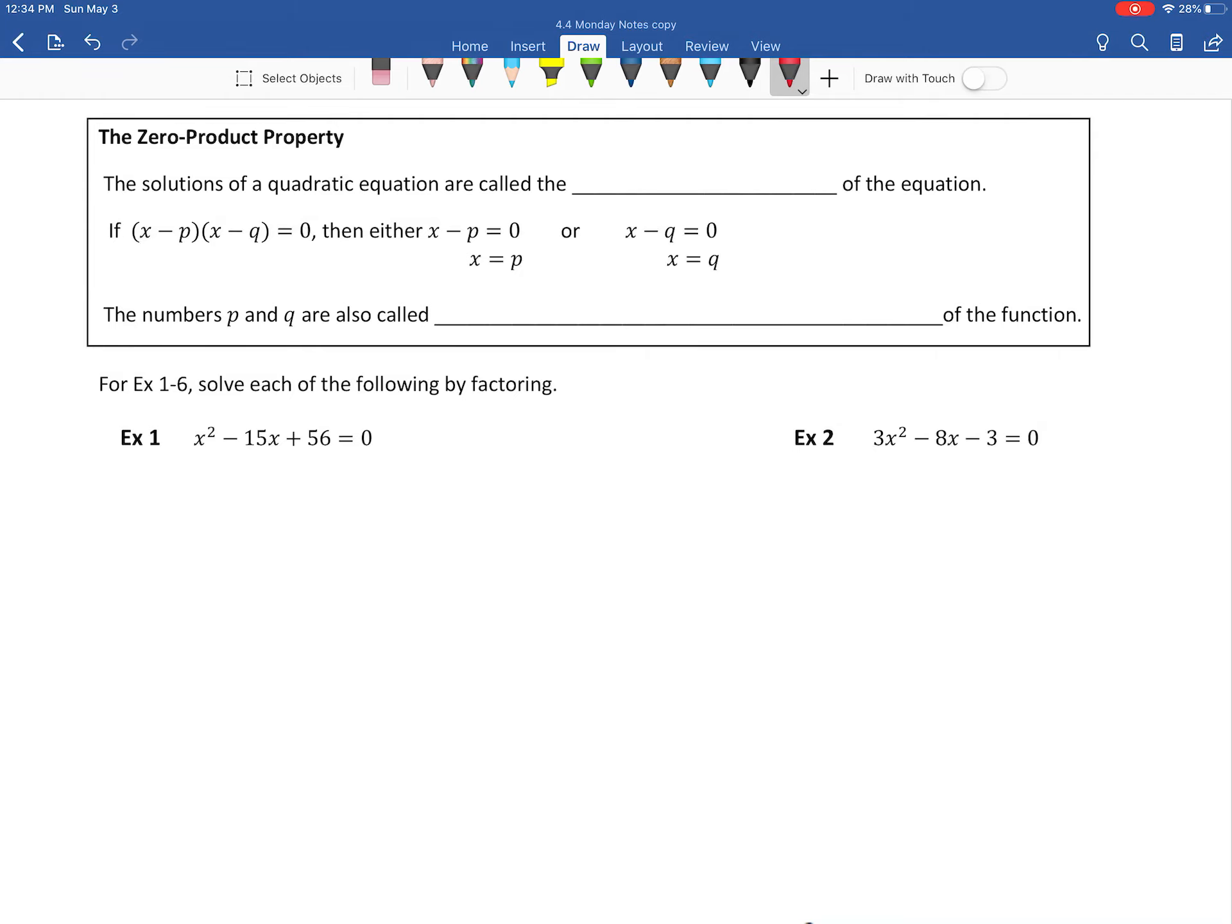Here we are at our example one from our 4.4 set of notes. We're talking about the zero product property today. This is actually a pretty important property that you're not only going to use for us, but also especially in honors algebra two, pre-calc, and calculus. This really comes up quite a bit. It's pretty much how you solve for a lot of things for those higher degree polynomials. So definitely know how to do this because you're going to apply it a lot.